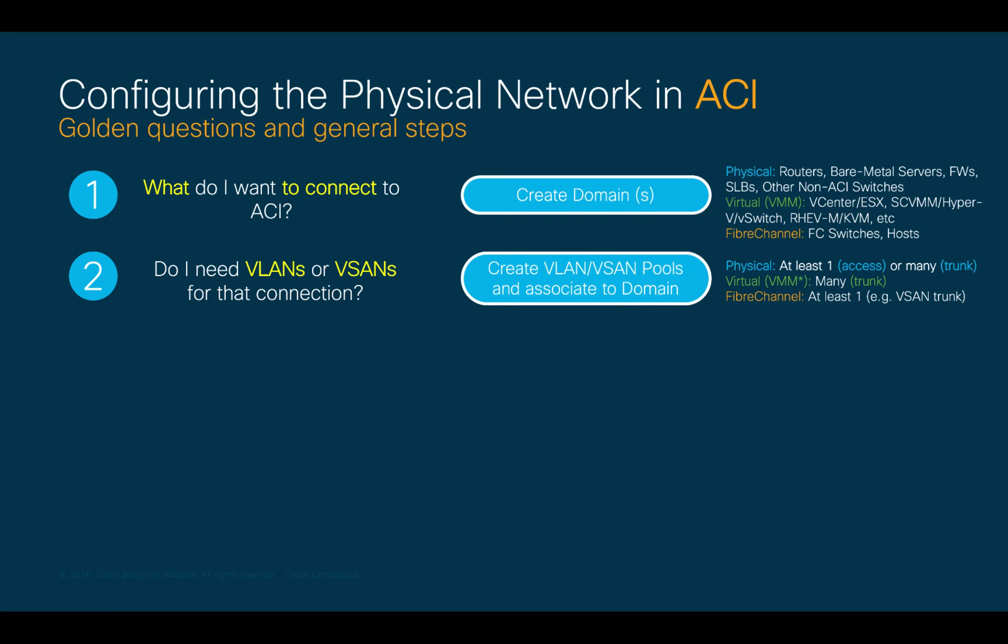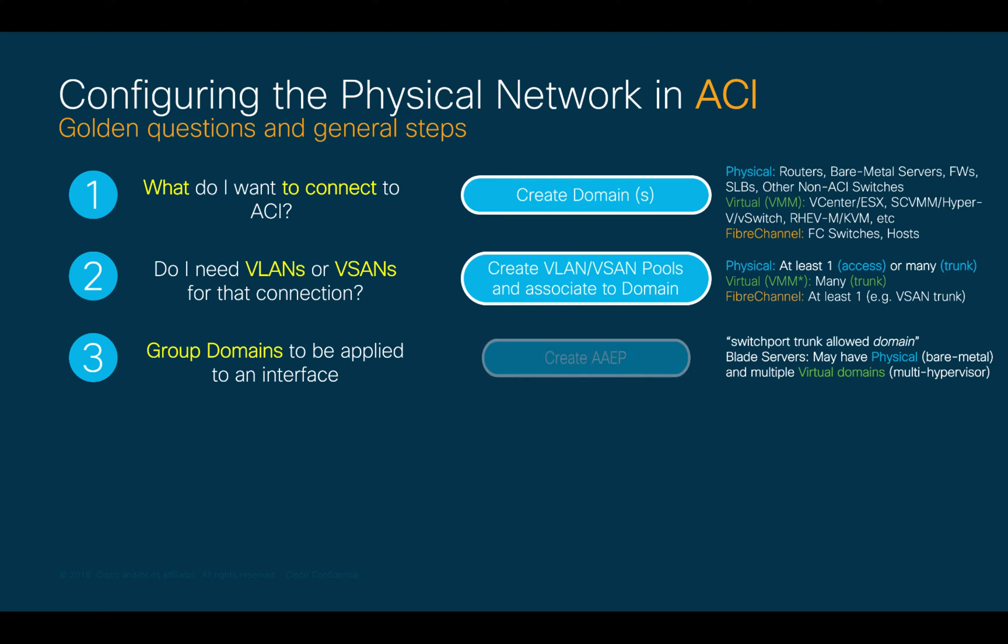The third step now is to group all the domains you created in step 1, which you will want to allow on a specific interface later. We do this by creating something called an AAEP. Most of the time, you would think you will have a single domain attached to a specific interface. Therefore, you would create one AAEP and assign it to the domain you created in step 1.